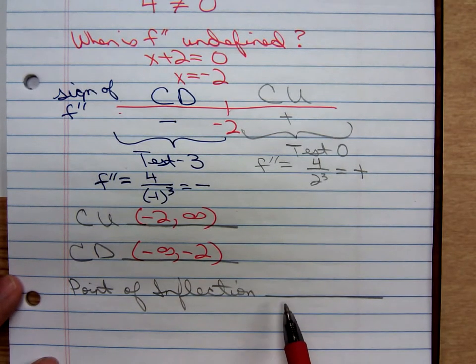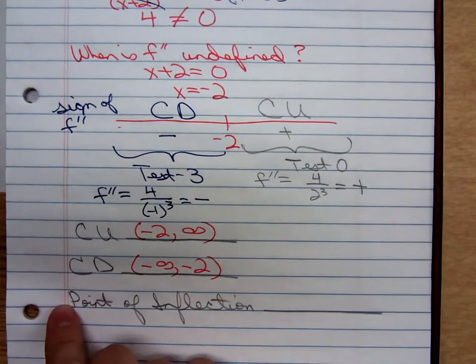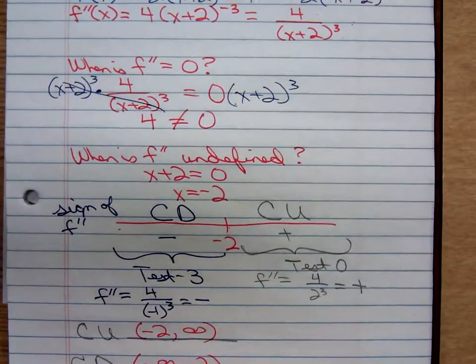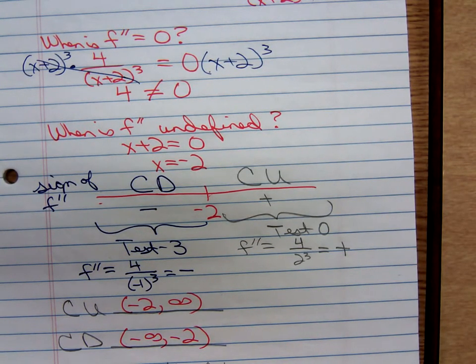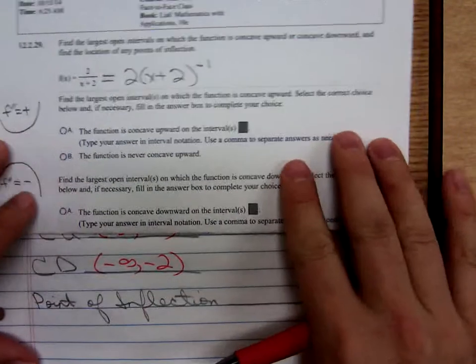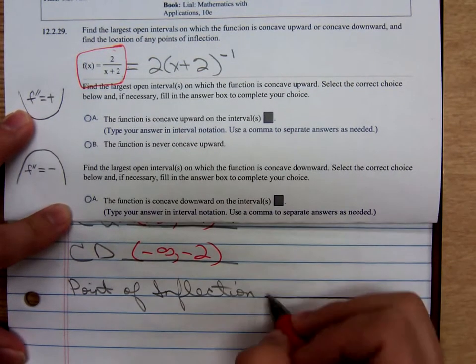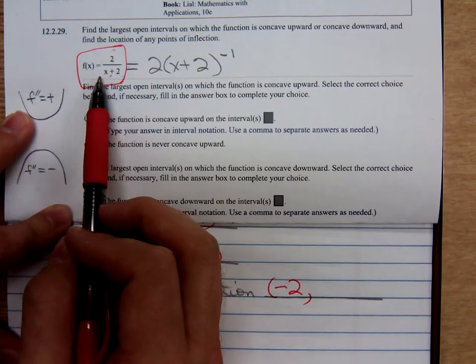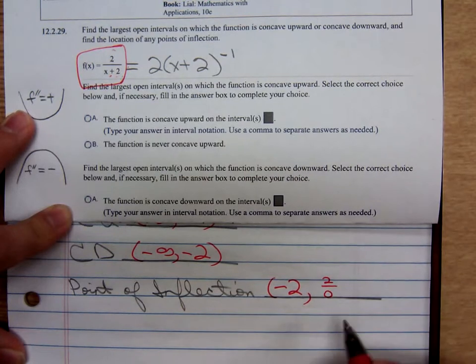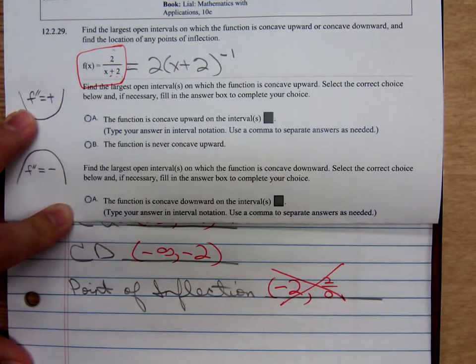Point of inflection, that is the interesting part. The point of inflection is an ordered pair. If you take negative 2 and plug it into the original function, what Y coordinate are you going to get? Here is the original function. Try to plug in negative 2 there. If you plug negative 2 in for X, you are going to get a 2 over negative 2 plus 2 is 0. Is that a number? That is not a number.